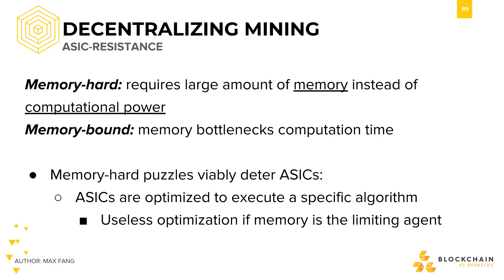A memory-hard problem is one that needs a large amount of requisite memory to solve, and a memory-bound problem is a problem that scales based on the amount of memory that you have. These problems deter ASICs since optimizing computation is useless if memory is the limiting agent.